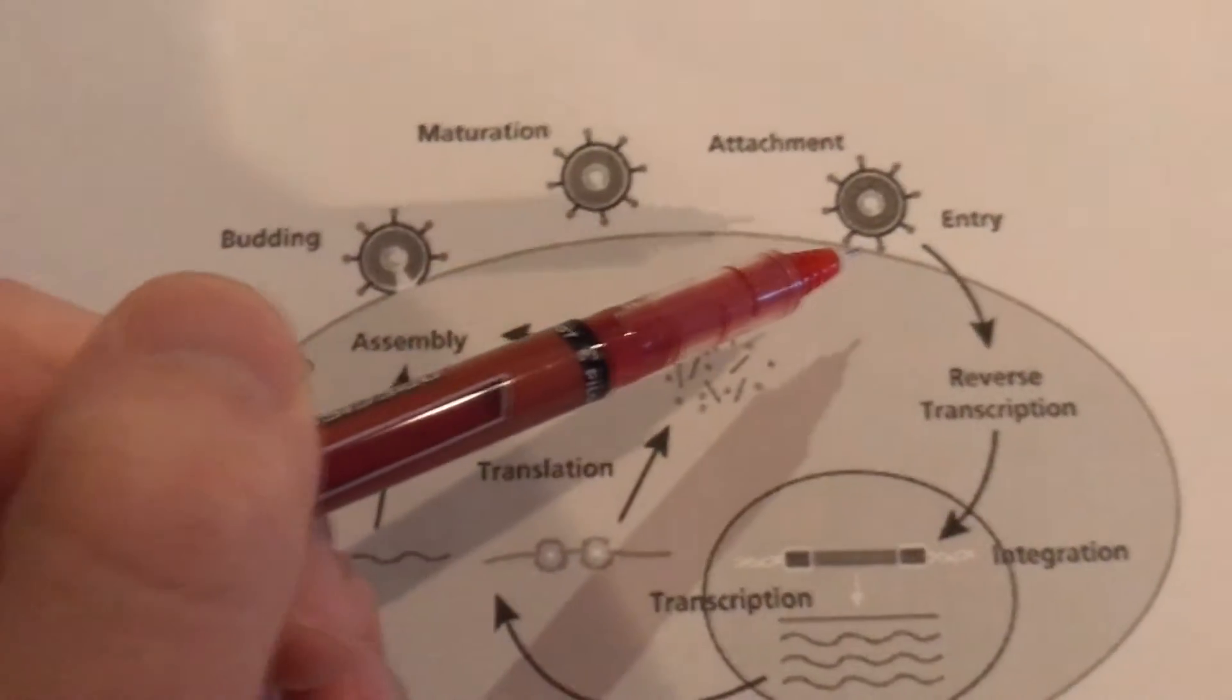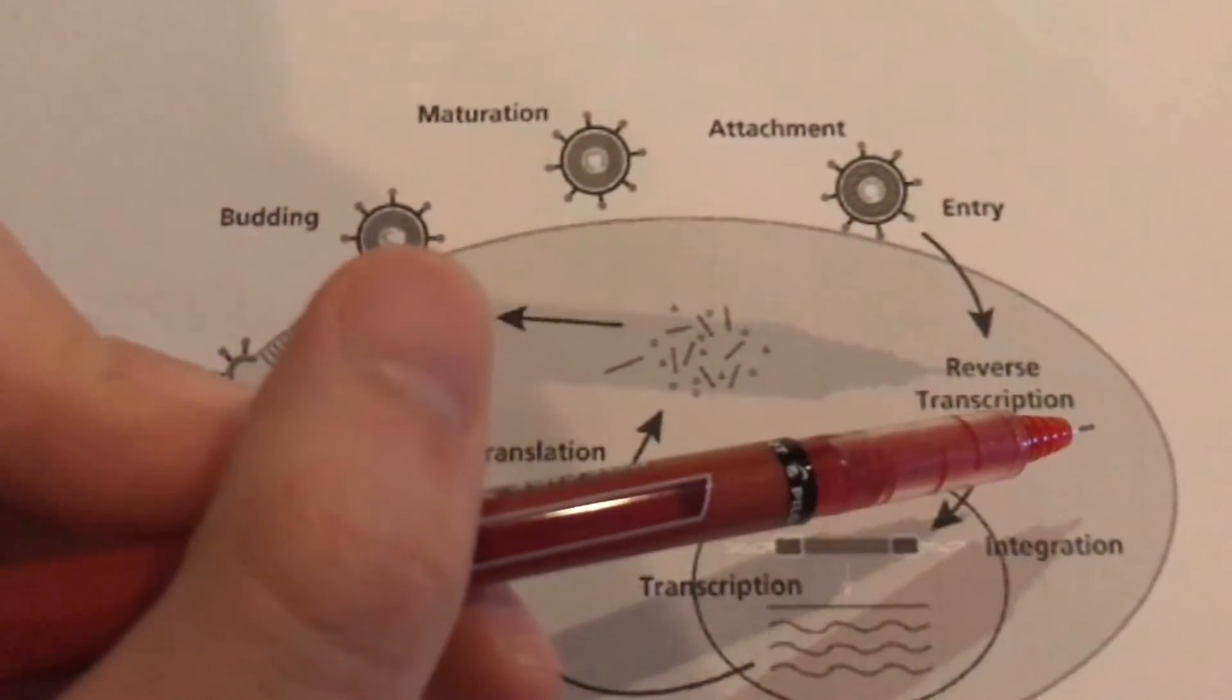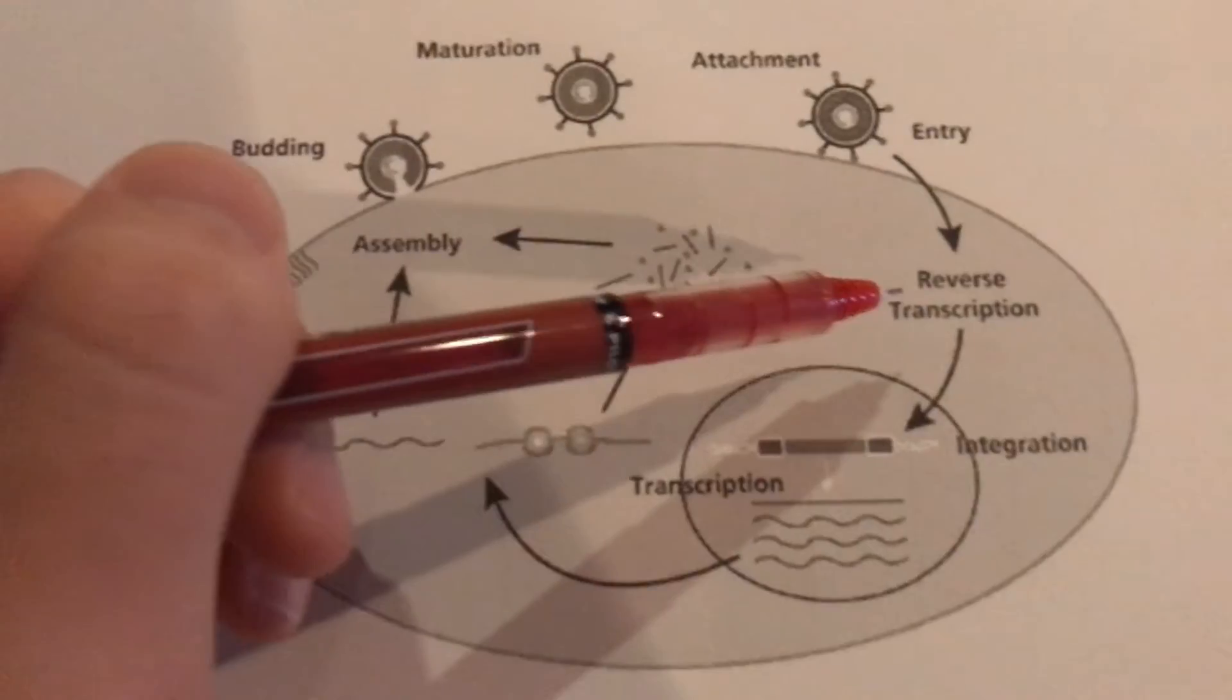Retroviruses first attach to the host cell membrane and then enter the host cell, where they undergo reverse transcription via the enzyme reverse transcriptase,